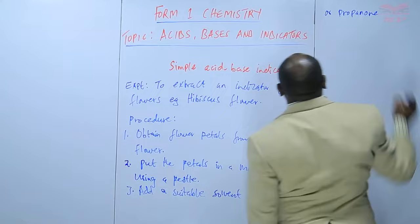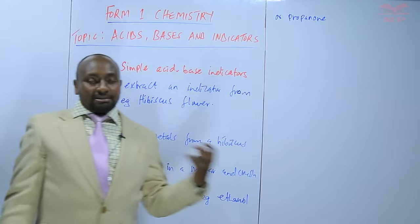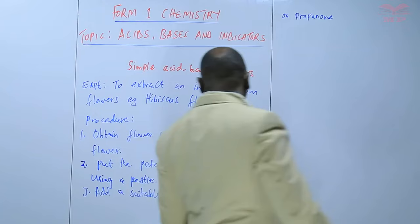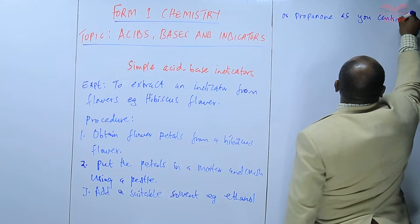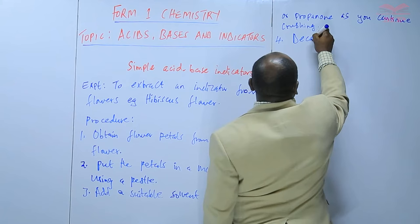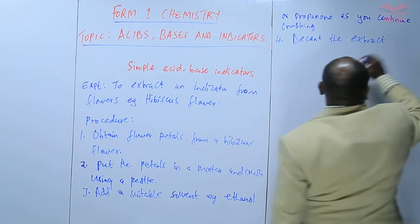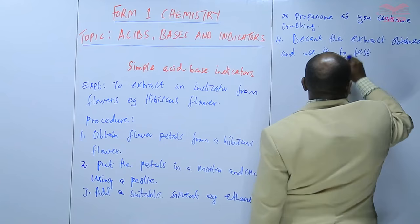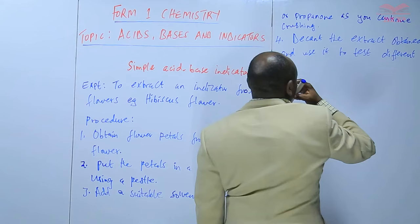Ethanol and propanone are good solvents because they can dissolve the color — they can be used to extract the color from the flowers. So as you crush, you add a solvent and continue crushing. Then, you decant the extract obtained and use it to test different solutions.